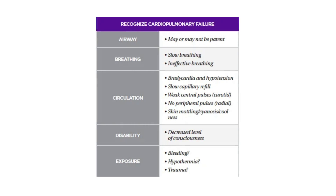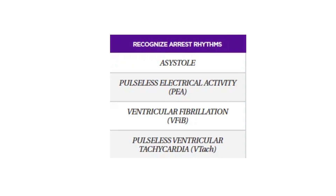Recognizing cardiopulmonary failure can be done by following the ABCDE survey, which checks for airway, breathing, circulation, disability, and exposure. For further details on these factors, refer to Table 22 in your corresponding PALS manual.